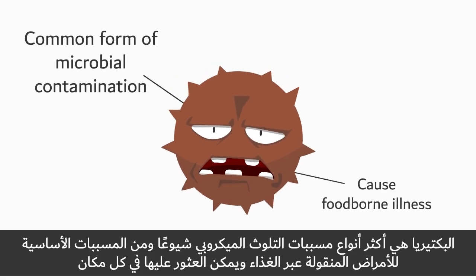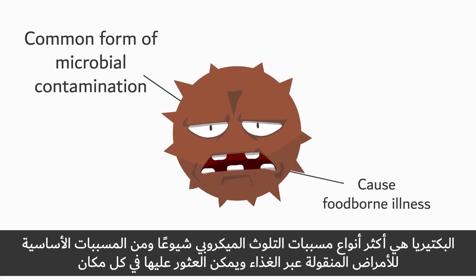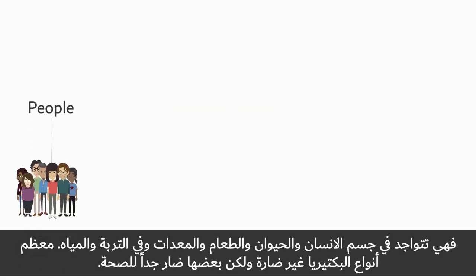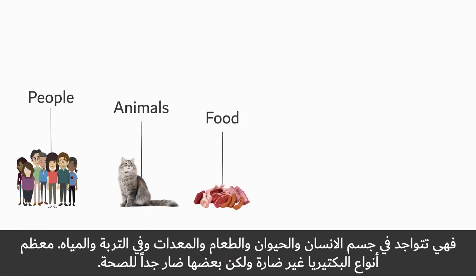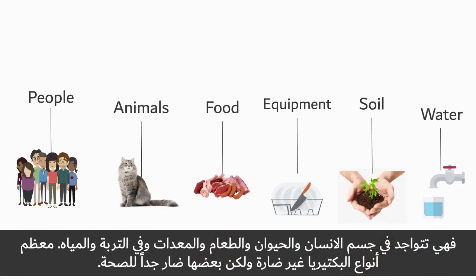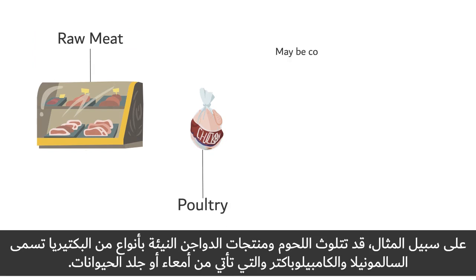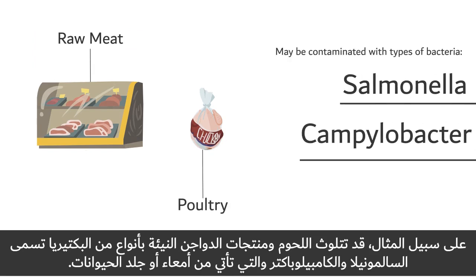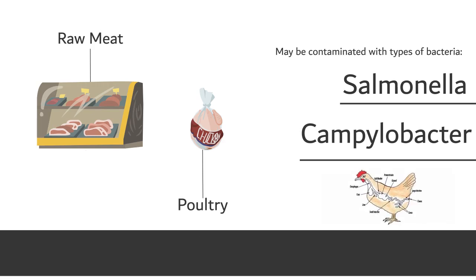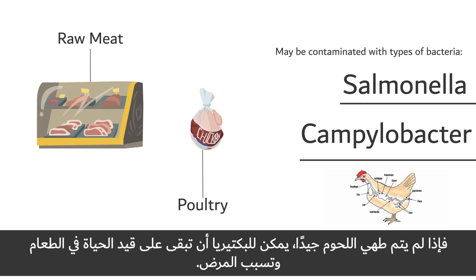Bacteria are the most common form of microbial contamination that cause foodborne illness, and they can be found everywhere – on people, animals, food, equipment, in soil and water. Most bacteria are harmless. However, some aren't. As an example, raw meat and poultry may be contaminated with types of bacteria called salmonella and campylobacter that come from the intestine or skin of the animals. If the meat is not cooked well, the bacteria can stay alive in the food and cause illness.